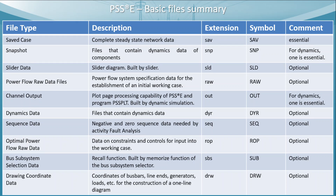The save case file contains all completely steady-state network data and can only be saved with the .sav extension — this file is essential as all steady-state network data is present in it. The snapshot files contain the dynamic data of components; initially the user provides data in a dynamic data file called .dyr, and then PSSE generates the snapshot files, which are essential for dynamic purposes. There is also a slider data file, which is the slider diagram built by the slider and created by PSSE.